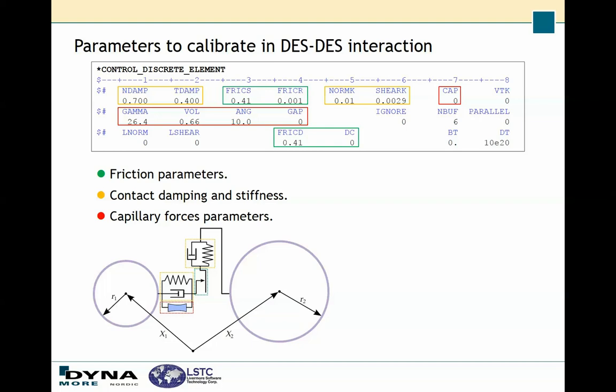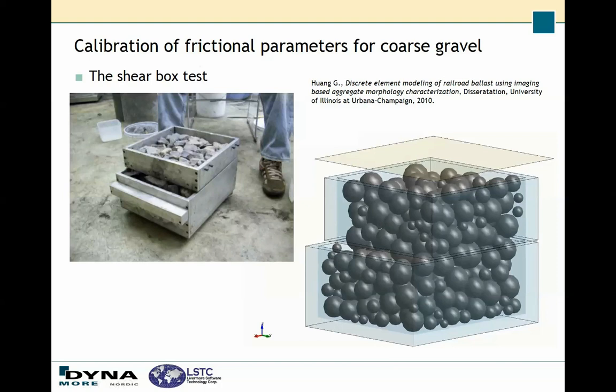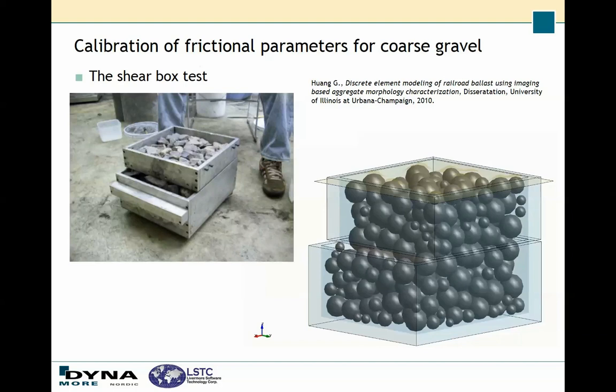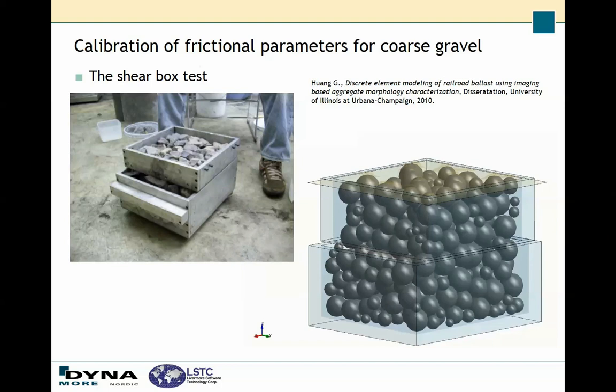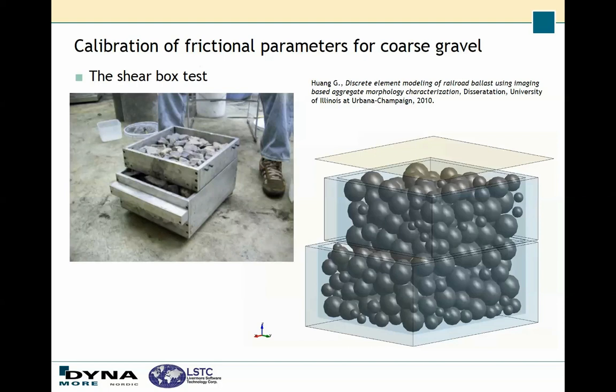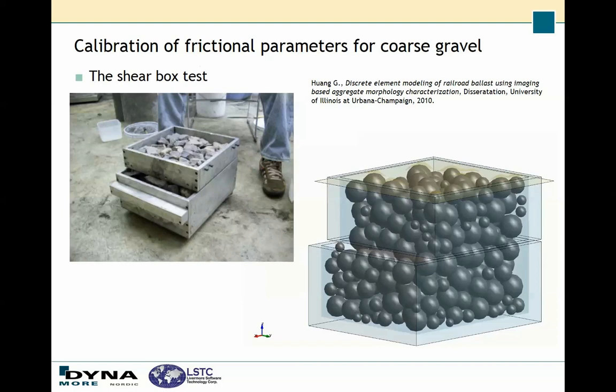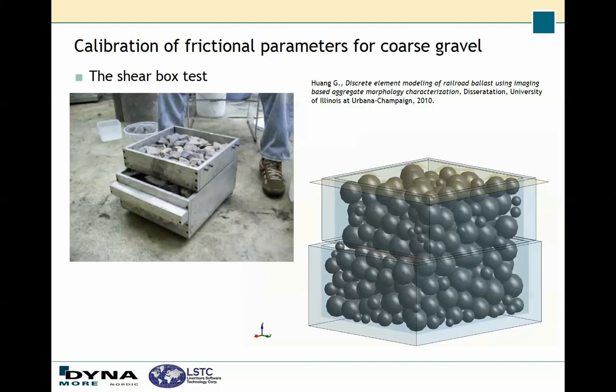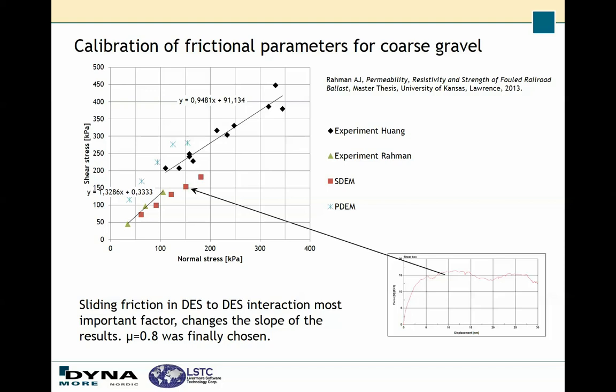A couple of years ago we came across a dissertation containing experimental results from a shear box test, so we decided to try to use these results to calibrate friction parameters for rocks. A pressure is applied on the top of the volume containing the rocks, and then the upper half of the box is displaced so that shear is created in the bulk volume. We also found a master thesis with similar test data and included that as well. What we found was that sliding friction in the sphere-to-sphere interaction was the most important factor in changing the force level of the shearing.